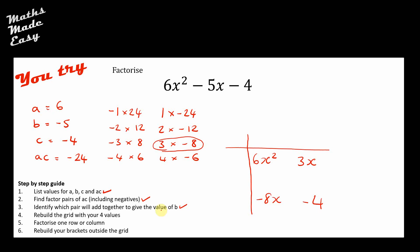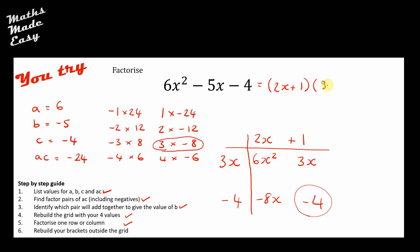I'll factorize the first row: highest common factor of 6x² and 3x is 3x. Then filling in the grid: what times 3x gives 6x²? That's 2x. What times 3x gives 3x? That's positive 1. What times 2x gives negative 8x? That's negative 4. Checking: 1 × negative 4 = negative 4 ✓. So this factorizes to (2x + 1)(3x − 4). Well done if you got that — it's not an easy example.